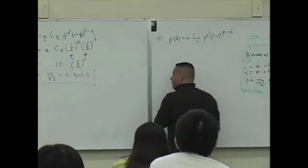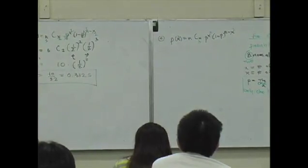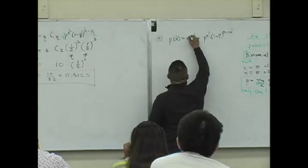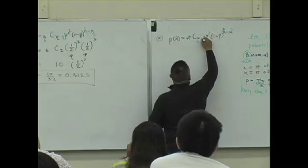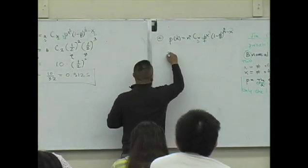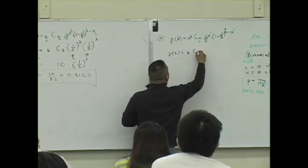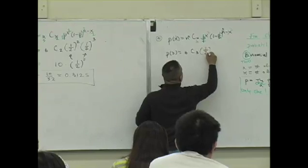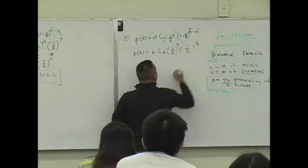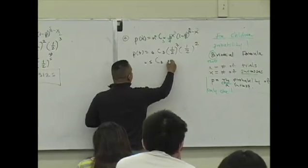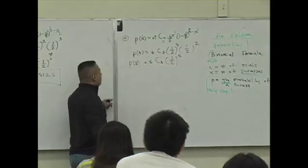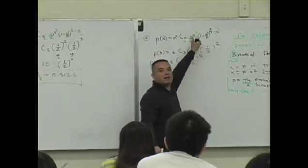And what is N? Okay, what is that little P? P is what? P of three is 5C3. 1 half to the third power. What's 1 minus 1 half? Not 1 half. What's 5 minus 3? 2. So what happens again here? You guys see this pattern? This ends up being what? 1 half to the fifth. Same base, add the exponents. 3 plus 2 is 5.